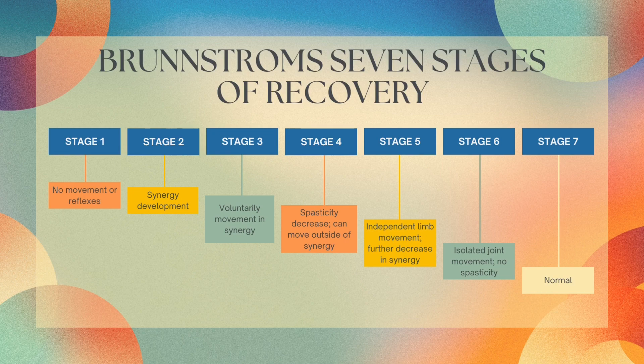Lastly, we're going over the Brunnstrom seven stages of recovery, commonly used for individuals who have had a stroke or traumatic brain injury. It classifies the effect on motor function into stages and outlines how muscle control can be restored after these injuries. Stage one is when there is no movement or reflexes. Stage two is when synergy develops. Stage three is when the individual has voluntary movement within that synergy.